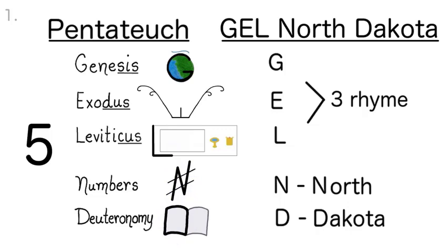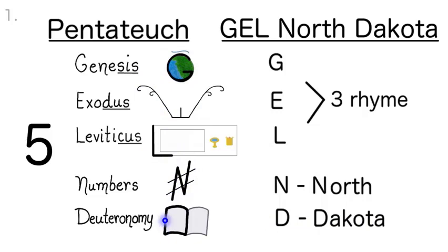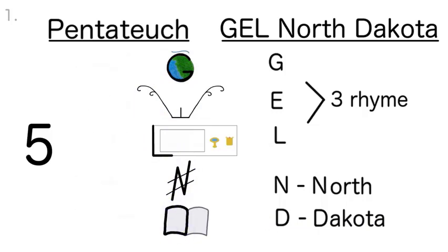Now let's say that three times: 5 Gel, North Dakota, Genesis, Exodus, Leviticus, Numbers, Deuteronomy. 5 Gel, North Dakota, Genesis, Exodus, Leviticus, Numbers, Deuteronomy. 5 Gel, North Dakota, Genesis, Exodus, Leviticus, Numbers, Deuteronomy.